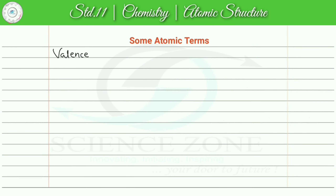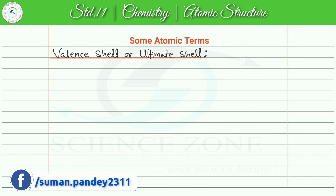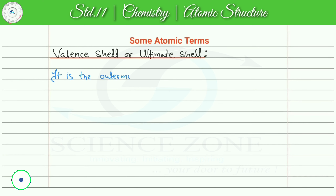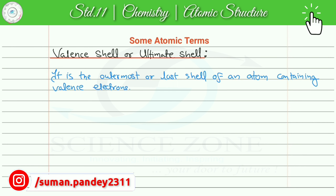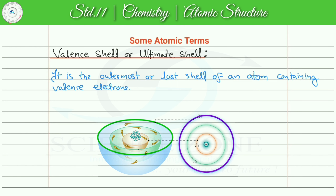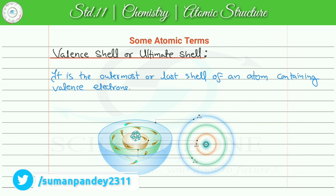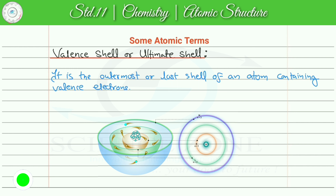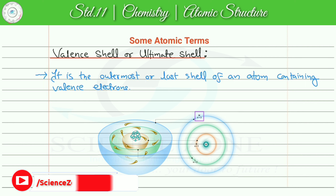Our next term is valence shell or ultimate shell. What is valence shell? It is the outermost or last shell of an atom containing valence electrons. किसी भी element का अगर हम electronic configuration लिखेंगे तो उसमें जो outermost shell होता है या फिर last shell होता है जिनमें valence electron present है, that shell is valence shell, और it is known as ultimate shell.